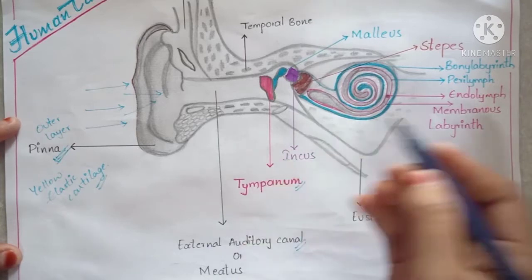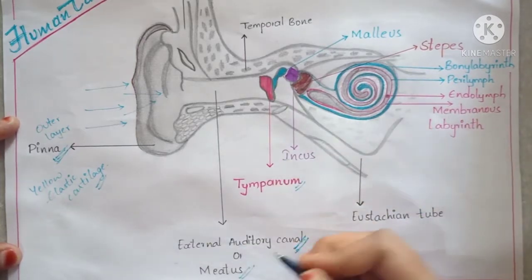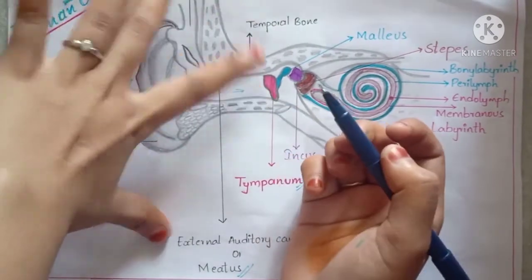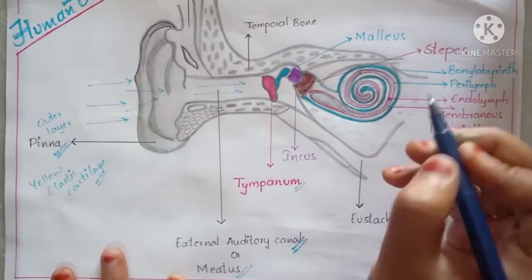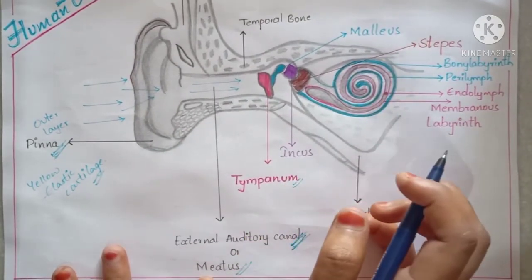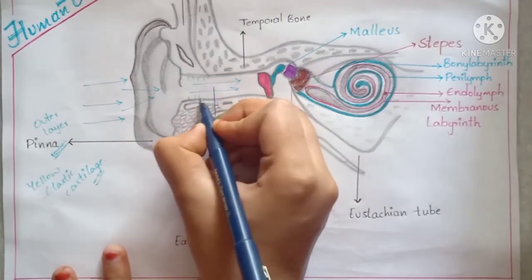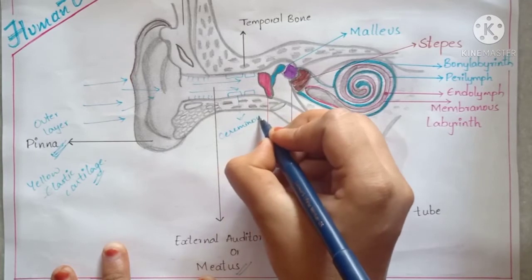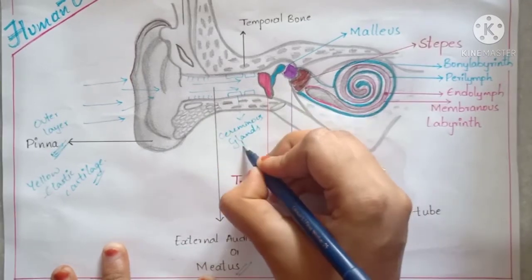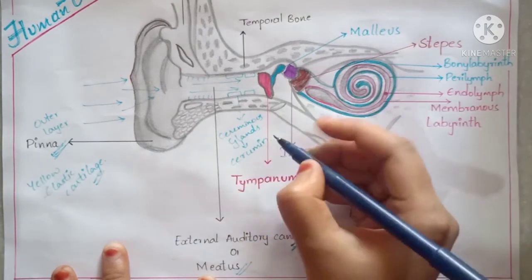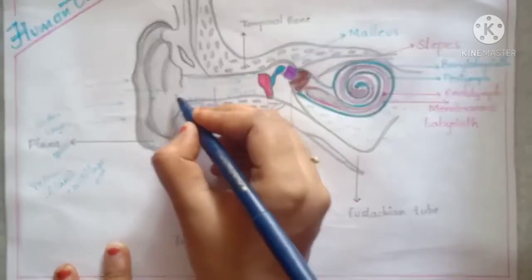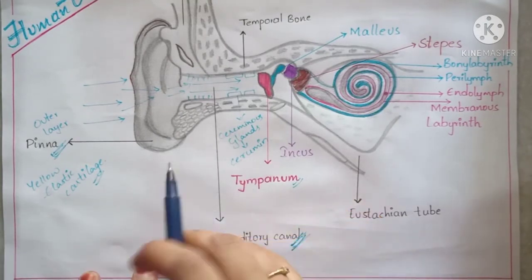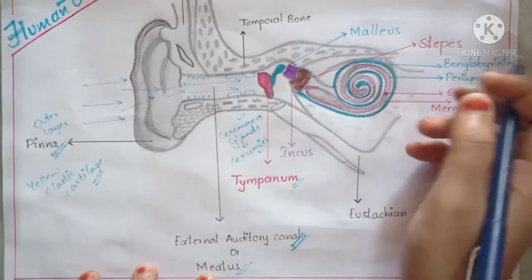After the pinna, we have the external auditory canal, also known as the meatus. It is the tube-like structure going into the ear — as far as you can insert your finger. In the external auditory meatus, we have small hairs and glands known as ceruminous glands. These ceruminous glands secrete a wax-like substance called cerumen, and along with the hairs, they filter dust particles and stop bacteria from entering the ear.